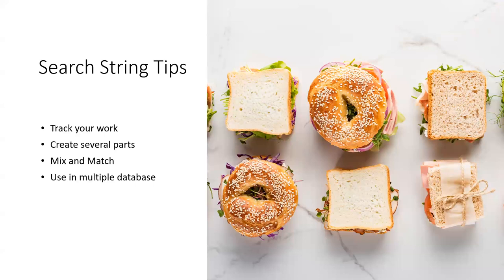Building search strings is kind of like making a sandwich. You want to track your work — your recipe — in case something works so you can recreate it, or if something doesn't work, you can pull it out. You can create several different clusters of strings, like ingredients, where you put all of your parentheses together, so you can mix and match them. Then you want to try various databases with those search strings or parts of search strings, because different databases have different items and you'll find different material.